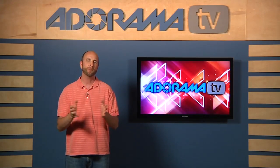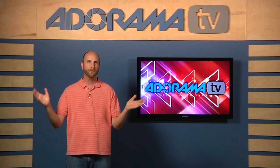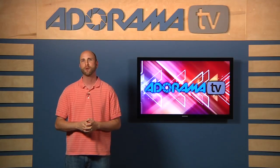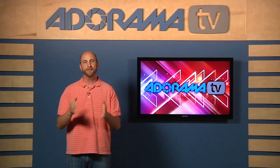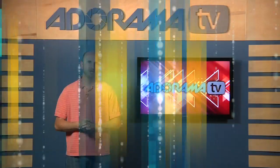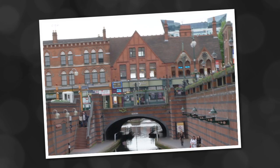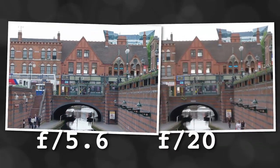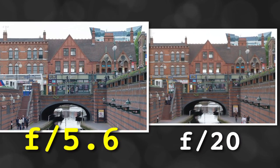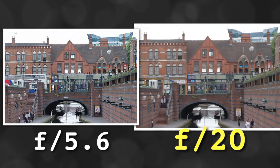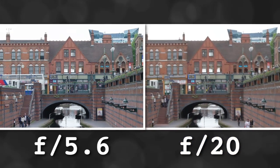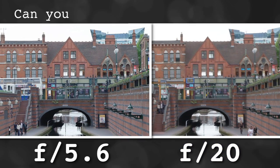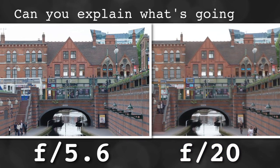Please forgive me if I pronounce your name wrong — we have questions from all over the world. The first question is from Koshik, and he said: I took two landscape shots, one at F20 and the other at F5.6, and to my surprise, the picture at F5.6 looks sharper than the F20 photo. I focused on the bridge in both cases. Can you explain what's going on?